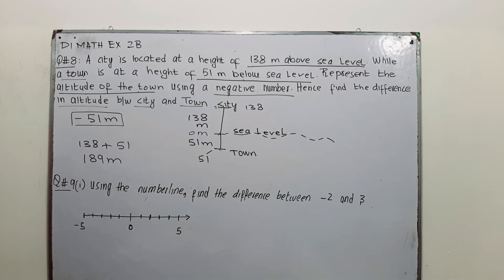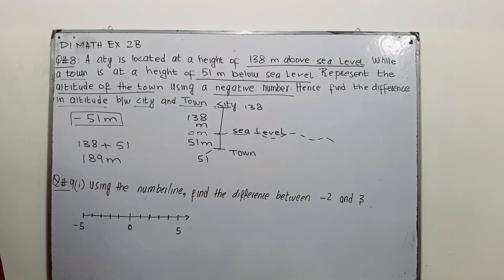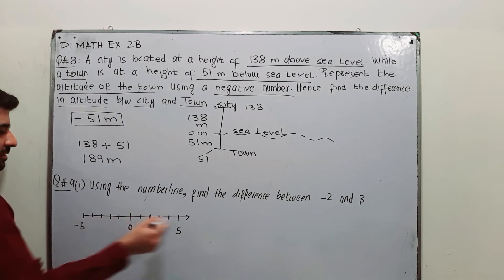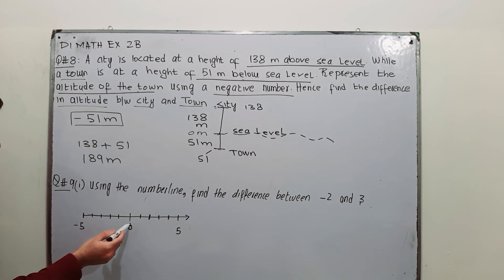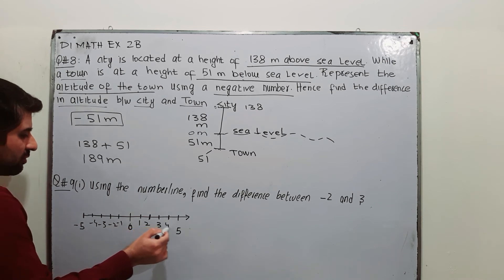Question number 9 part 1 says using the number line, find the difference between -2 and 3. This is your number line. This is 0, -1, -2, -3, -4, -5, while on the right side +1, 2, 3, 4, 5.